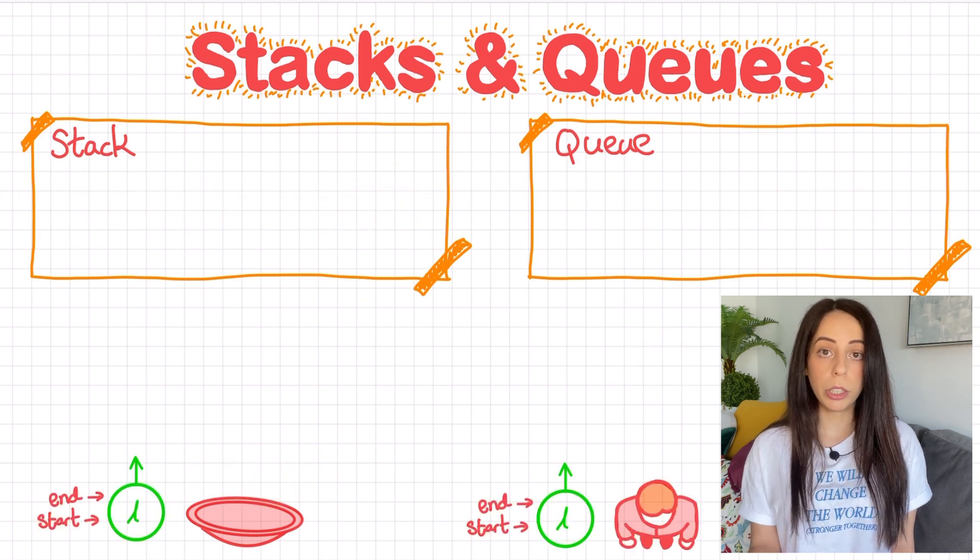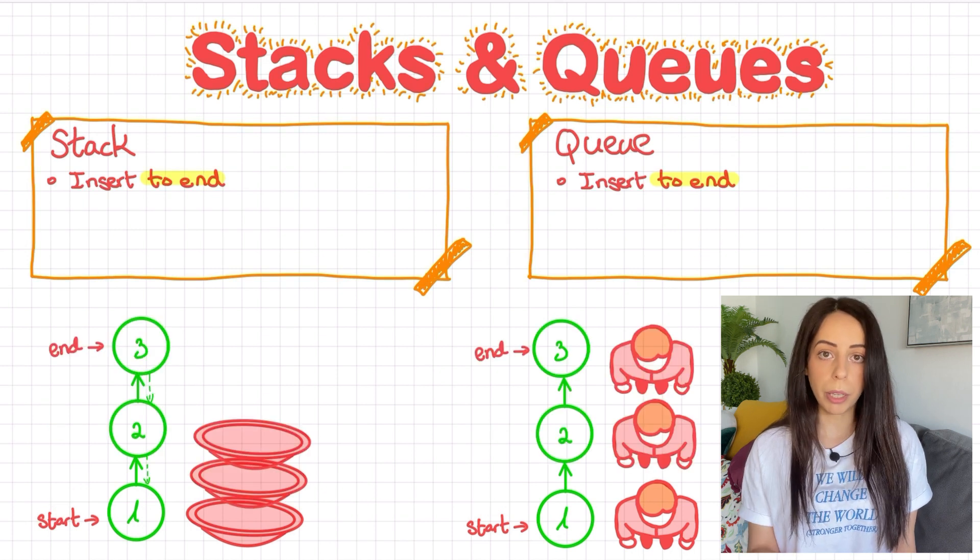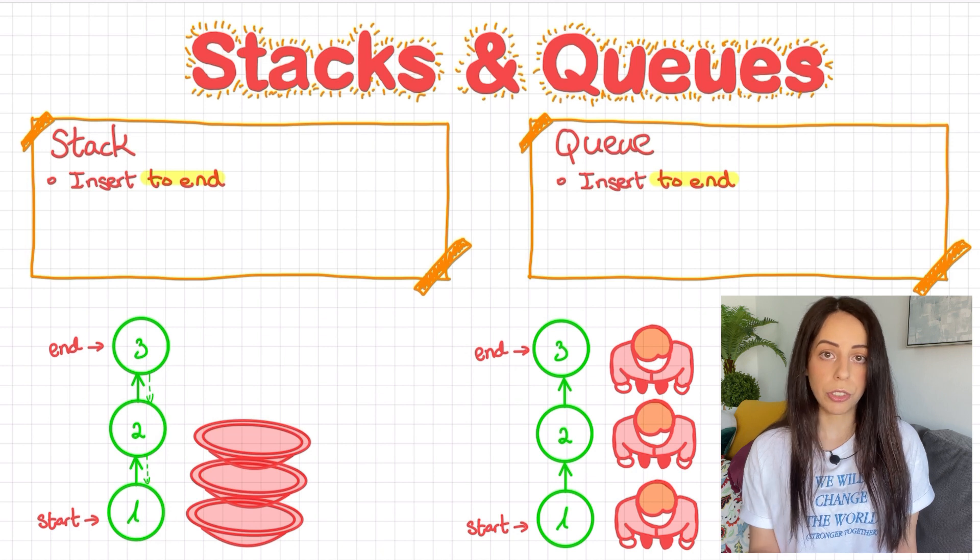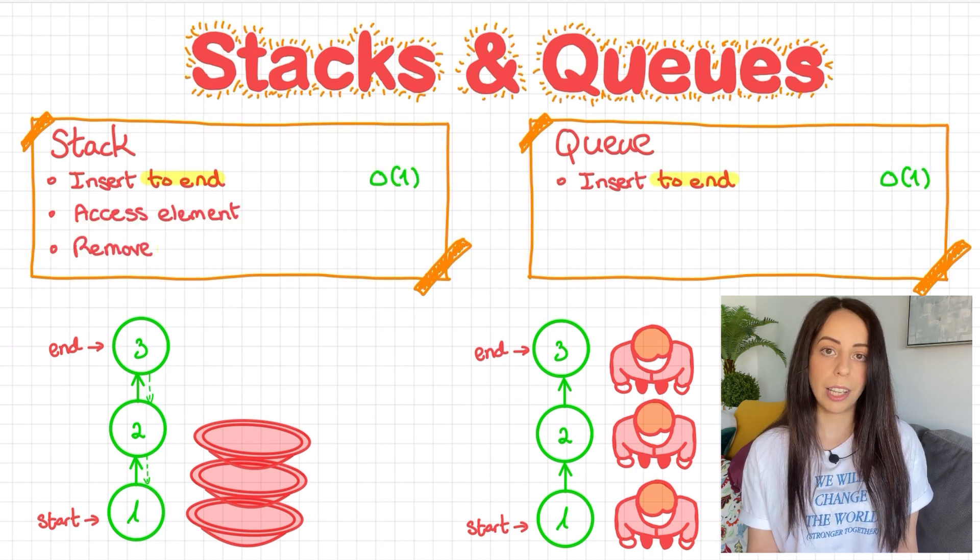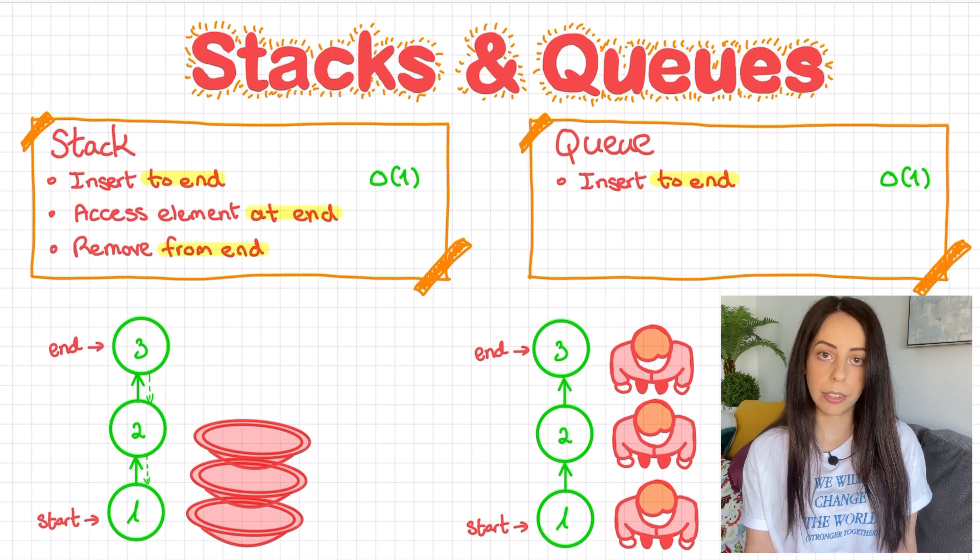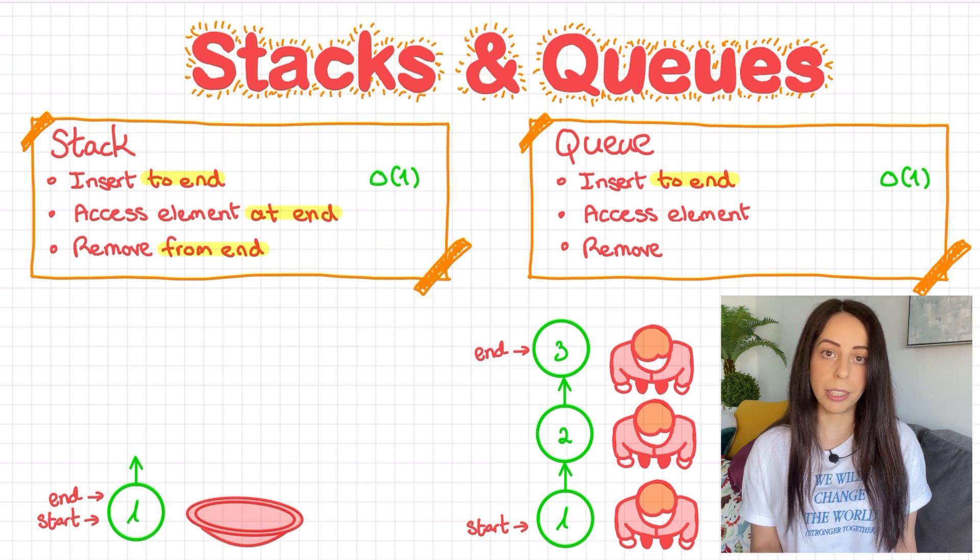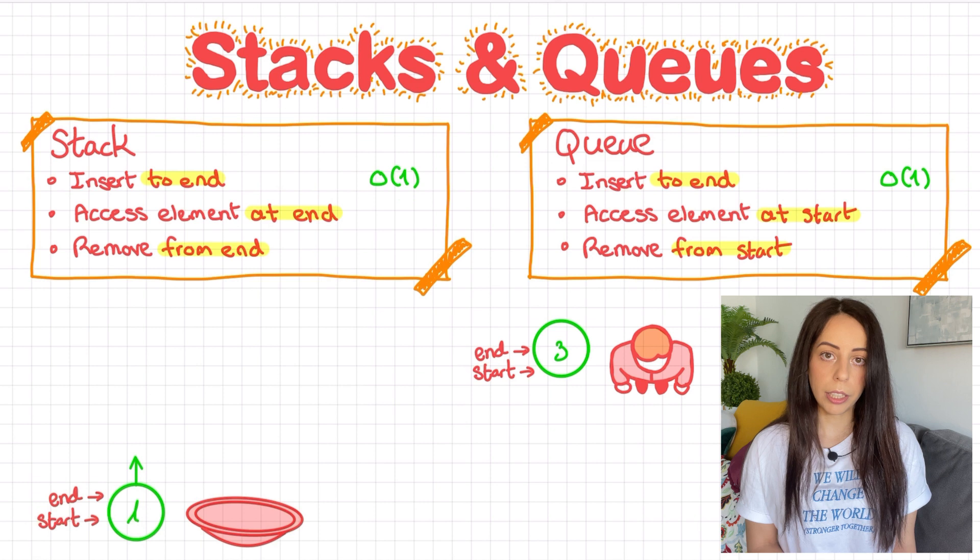So in both stacks and queues, you can only insert elements to the end of the list. You can't insert anything to the beginning, middle, or anywhere else. The time complexity for this insertion is just like a linked list, it's constant. In a stack, you can only remove the last element that was added to it, so the element at the end of the list. In a queue, you can only remove the first element that was added to it, the element at the beginning of the list. Again, complexity is just like that of a linked list, constant.